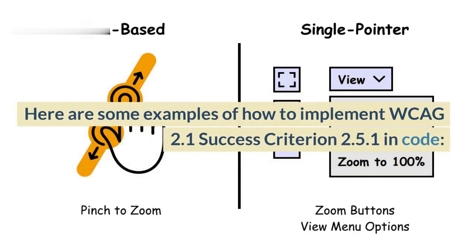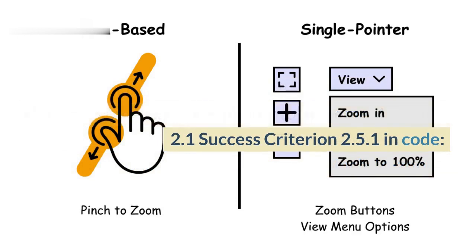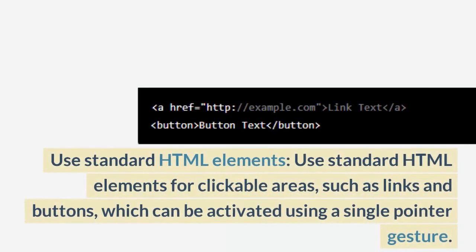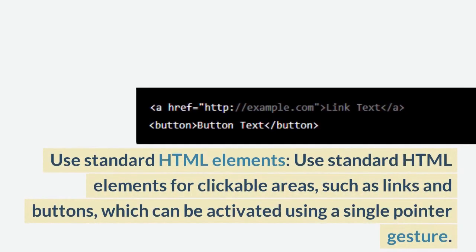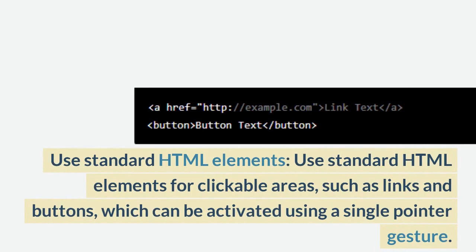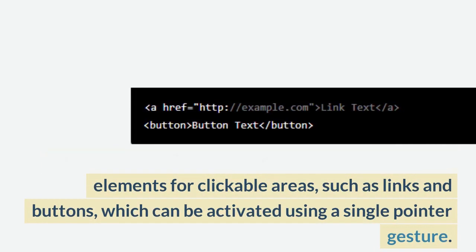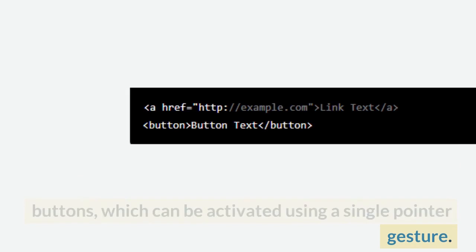Here are some examples of how to implement WCAG 2.1 Success Criterion 2.5.1 in code. Use standard HTML elements for clickable areas, such as links and buttons, which can be activated using a single pointer gesture.